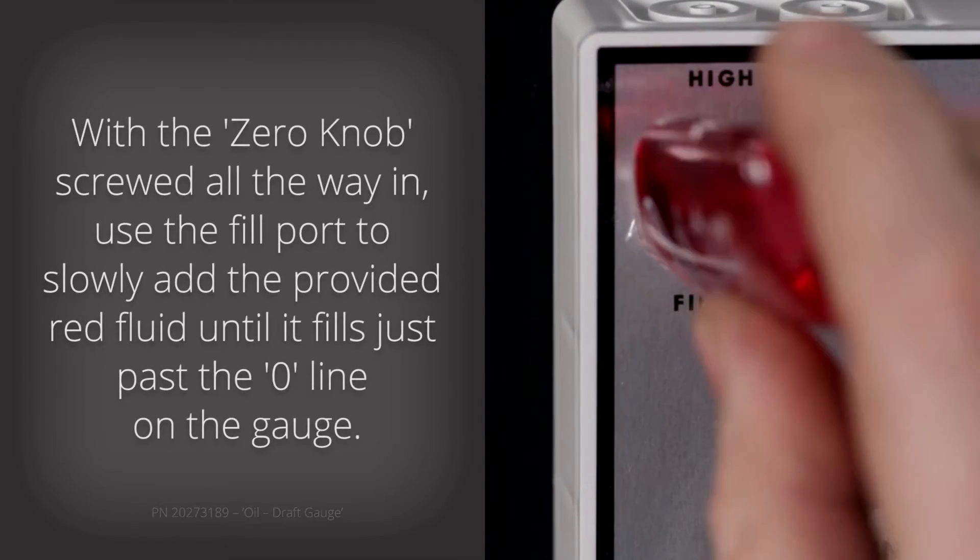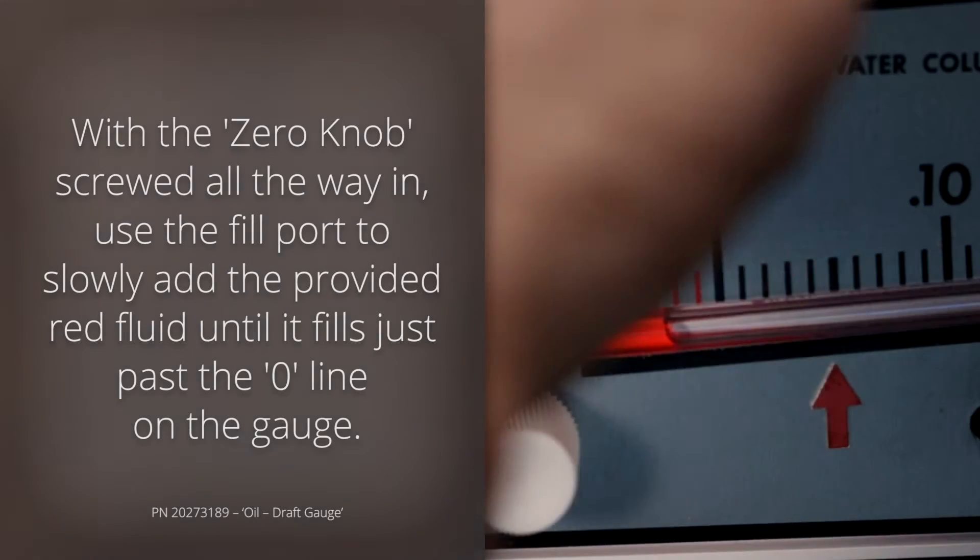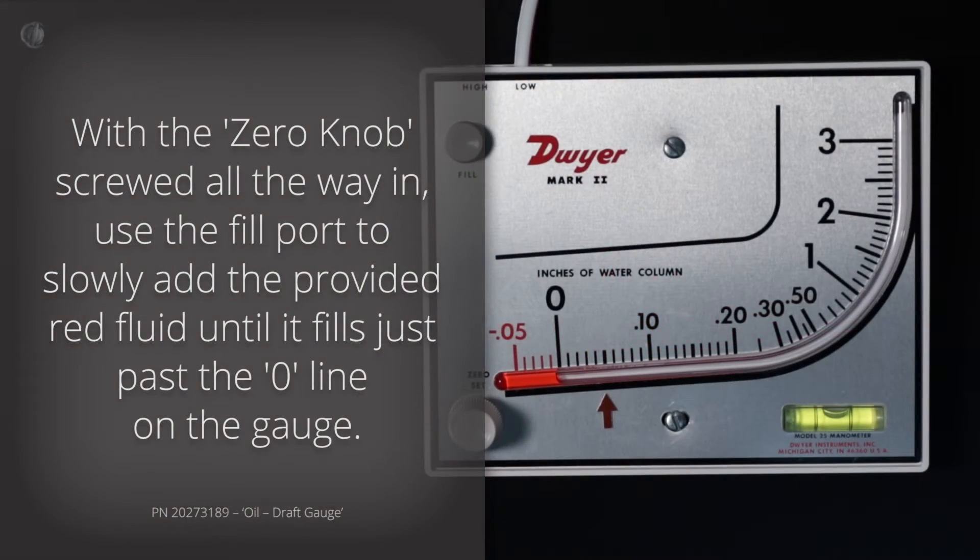With the zero knob screwed all the way in, use the fill port to slowly add the provided red fluid until it fills just past the zero line on the gauge.